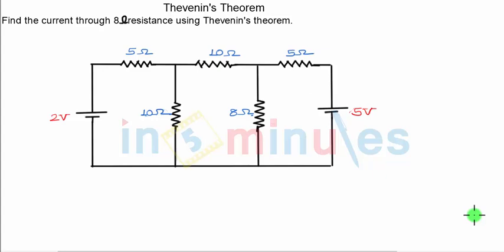We have had introduction on Thevenin's theorem and Norton's theorem. So we will now apply Thevenin's theorem in finding current through a given resistance in one given circuit diagram. According to Thevenin's theorem, across any two terminals entire network can be replaced with one single voltage source in series with one single resistance.